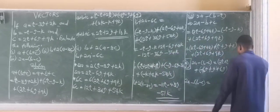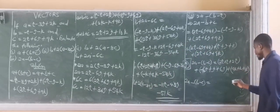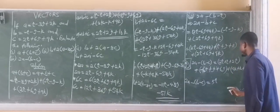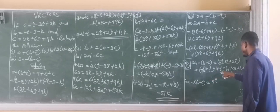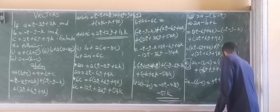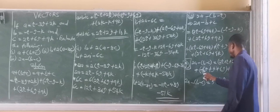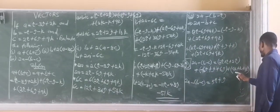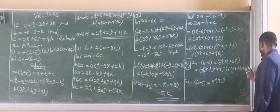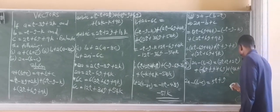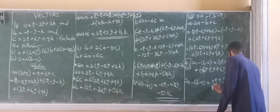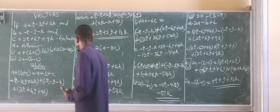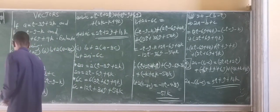So 2A minus (B minus C) is now equal to: 2I plus I plus 2I gives plus 5I. Minus 6J plus J plus 6J gives plus J. And 4K plus 1K plus 9K gives 14K. So the answer is 5I plus J plus 14K. That's the answer to the last question.